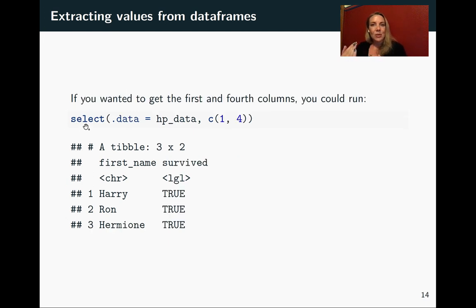Select works in a really similar way, but instead of slicing out certain rows, it's going to slice out certain columns for us. Again, we'll say the hp_data—in this case I'm showing an example where we want to get the first and the fourth columns. So the numeric vector here, where we're specifying the positions, evaluates to one and four, and then when we run that in select, you can see we're picking out just the first and fourth columns.